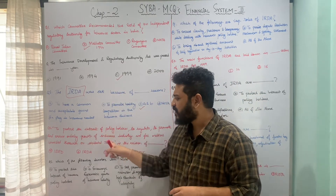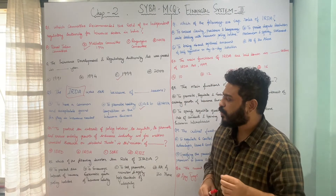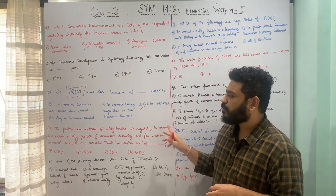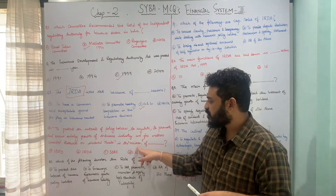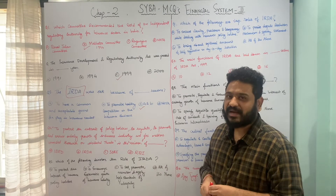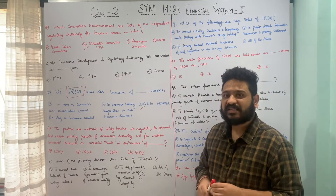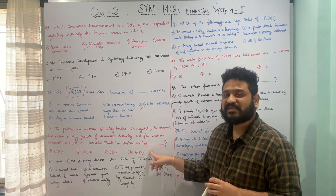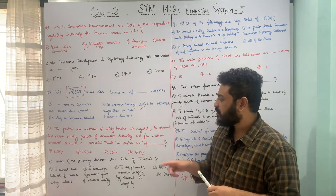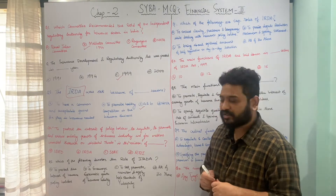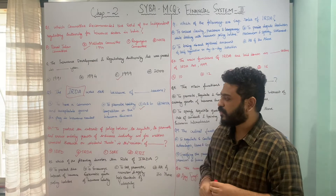The next question gives a statement and asks whose mission statement it is: 'to promote the interest of policyholders, to regulate, promote and ensure orderly growth of the insurance industry and for matters connected therewith or incidental thereto.' The options are A - IBRD, B - IRDA, C - SEBI, D - RBI. The correct answer is Option B — this is the mission of Insurance Regulatory and Development Authority of India.